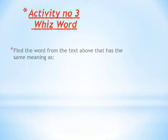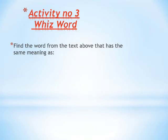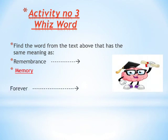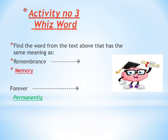There is another activity for you on page number six. Find the words from the text above that have the same meaning as: 'remembrance' — the answer is memory, which means remembering all the information entered into it. 'Forever' — the same meaning is permanently. Permanently means for a very long time.